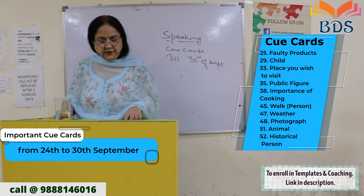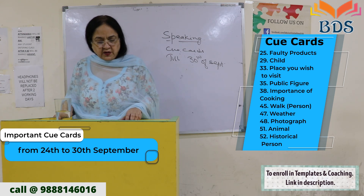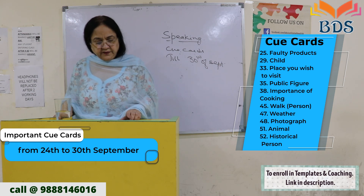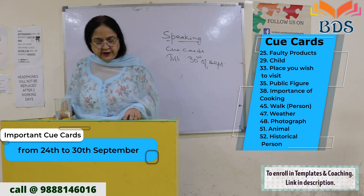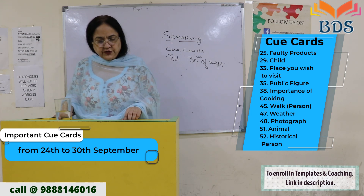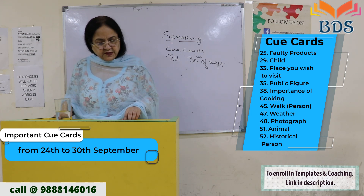Card number 45 — walk. Card number 47 — weather. Card number 48 — photograph. Card number 51 — animal. Card number 52 — a historical person.